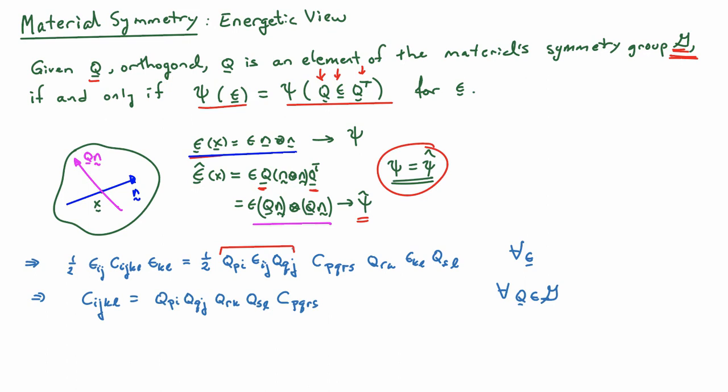This has to hold true for all epsilon, so that tells me that CIJKL is equal to QPI QJQ QRK QSL CPQRS. Again, every component here is given in a given basis.